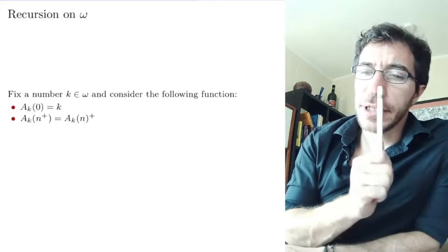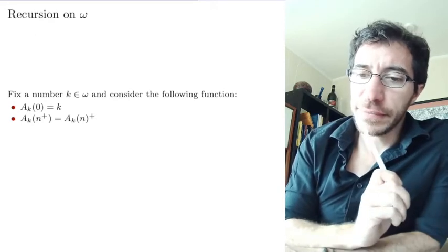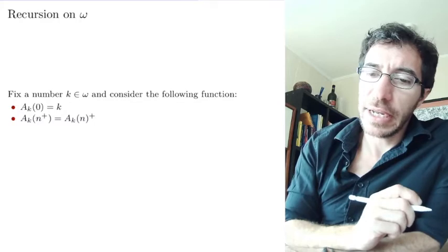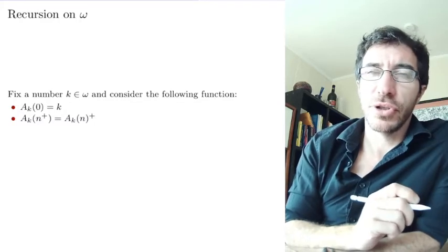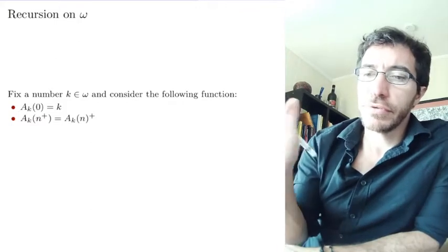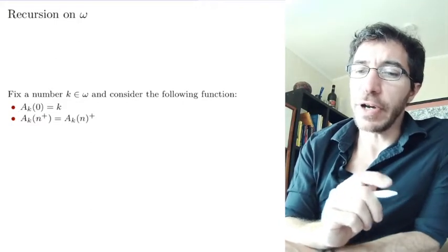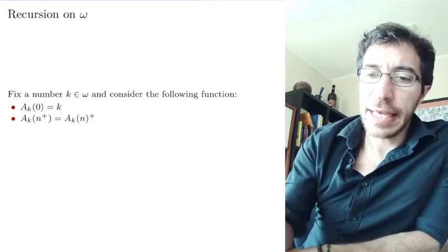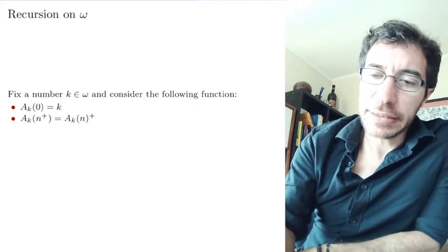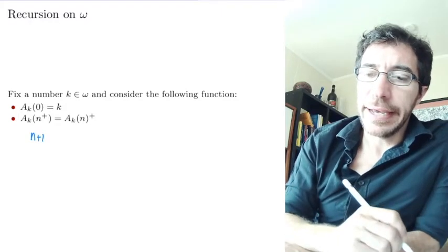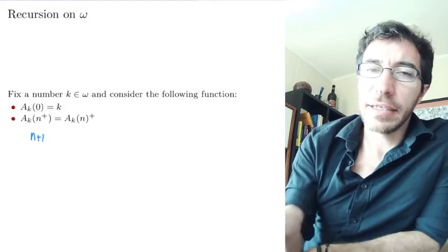Let's look at a couple of examples that are going to be very handy. I'm going to define the function a sub k by recursion. So fix the number k, 17 if you want, and now define this following function. At zero it's going to give you k and if you apply it at n plus, remember n plus is the same as n plus 1, it's going to give you a_k plus.